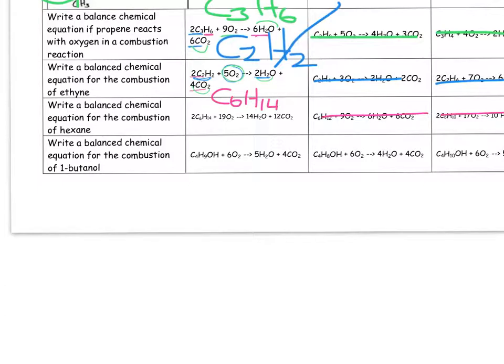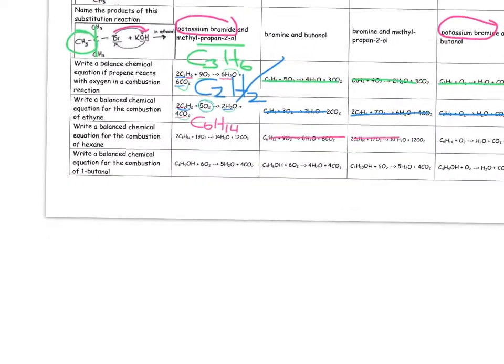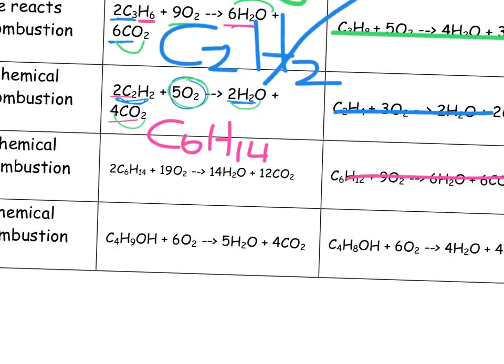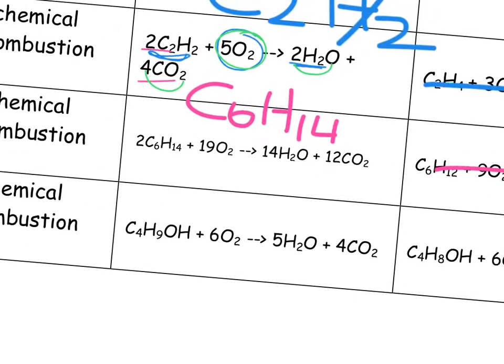And then if we just take a look here, the last one, there seems to be no effort made balancing over here at all, so let's take a look at the first one and see if it looks like it's balanced. And we have got 12 carbons, 12 carbons, 28 hydrogens, 28 hydrogens, 38 oxygens, and 24 plus 14, 38 oxygens on that side over there.